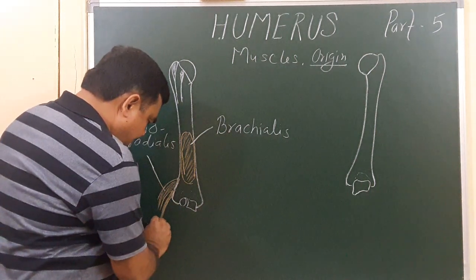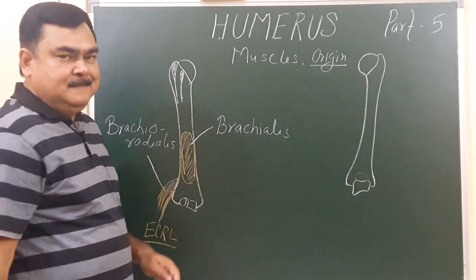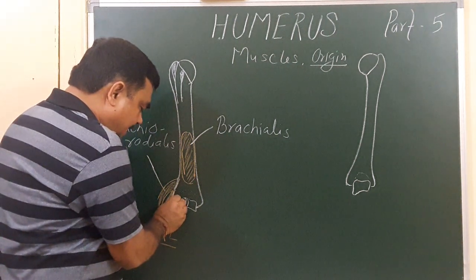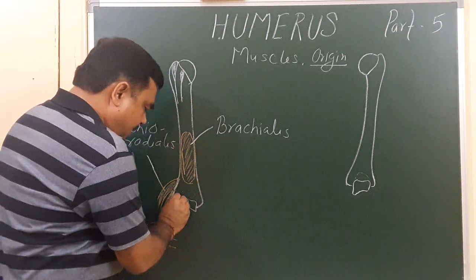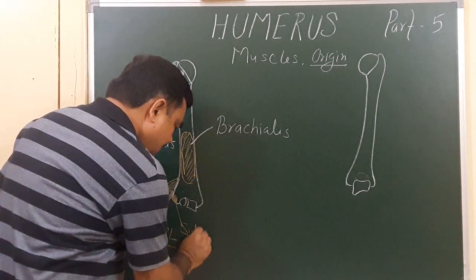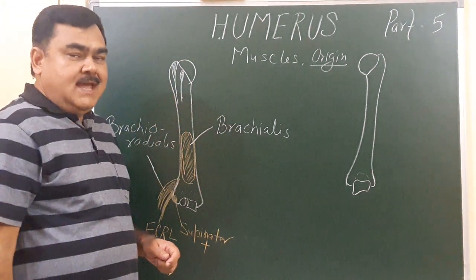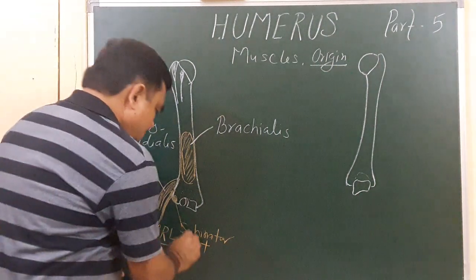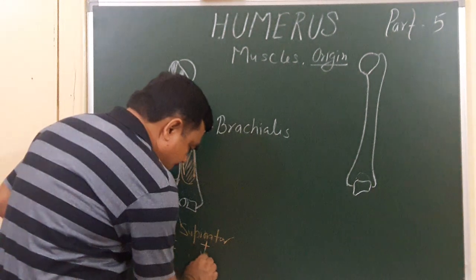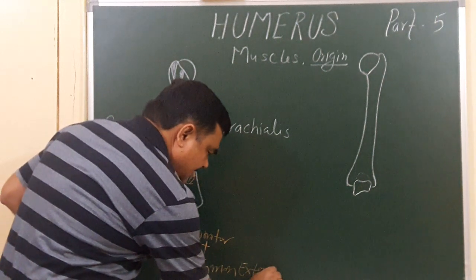This is the extensor carpi radialis longus muscle. From the lateral epicondyle, the supinator muscle takes origin along with the superficial extensor muscles of the forearm. This point is known as the common extensor origin.